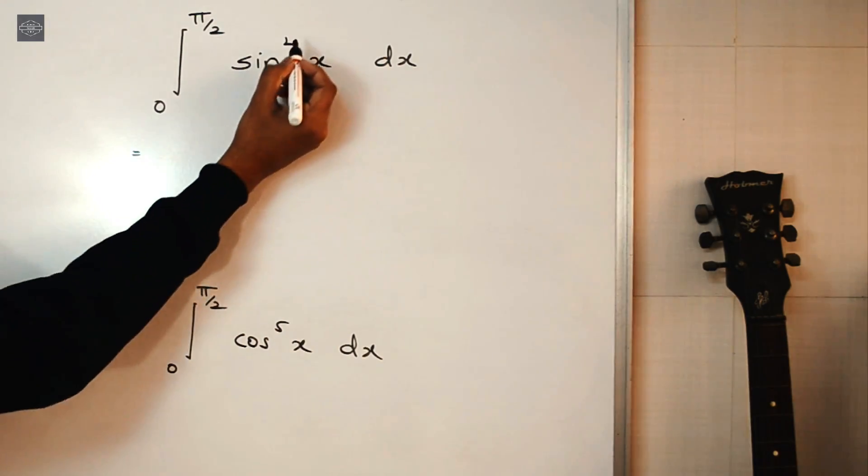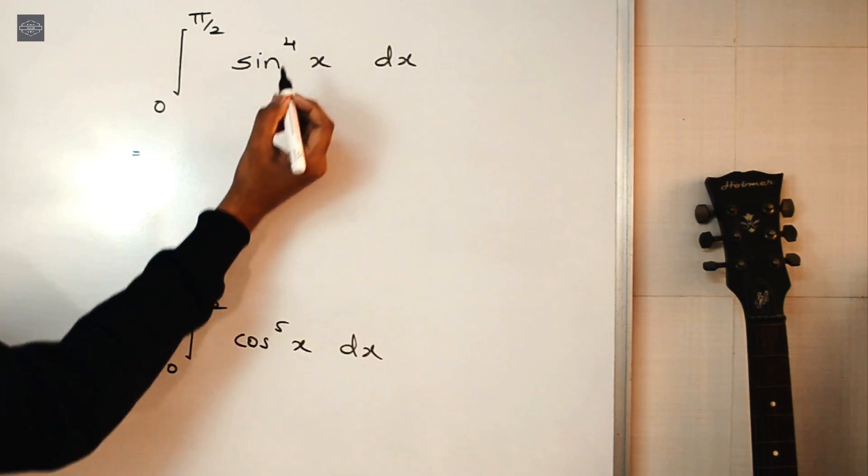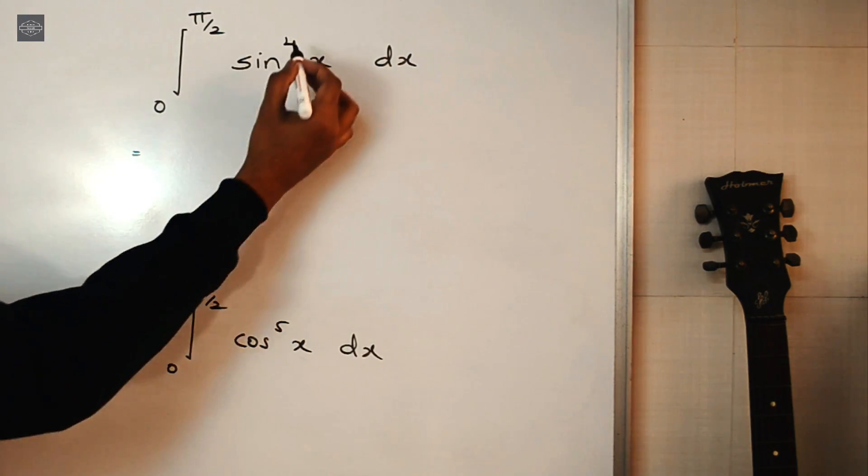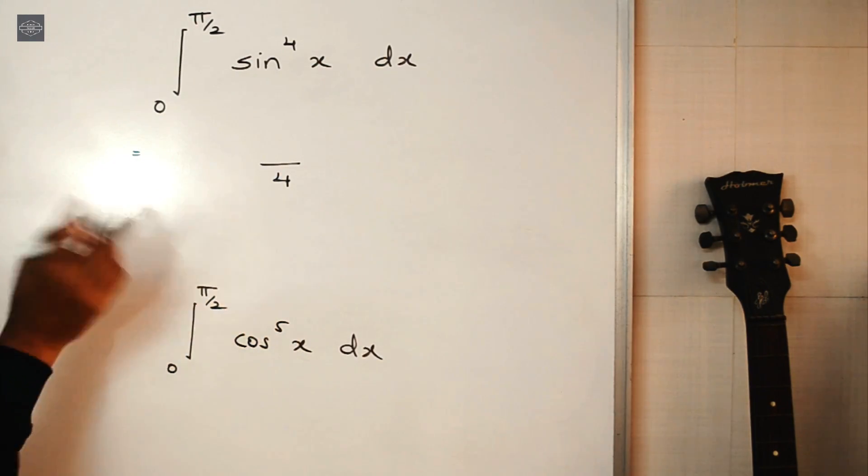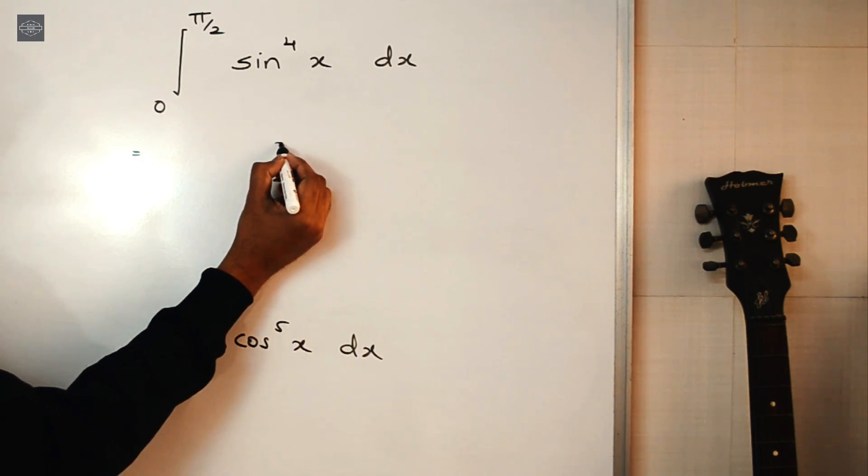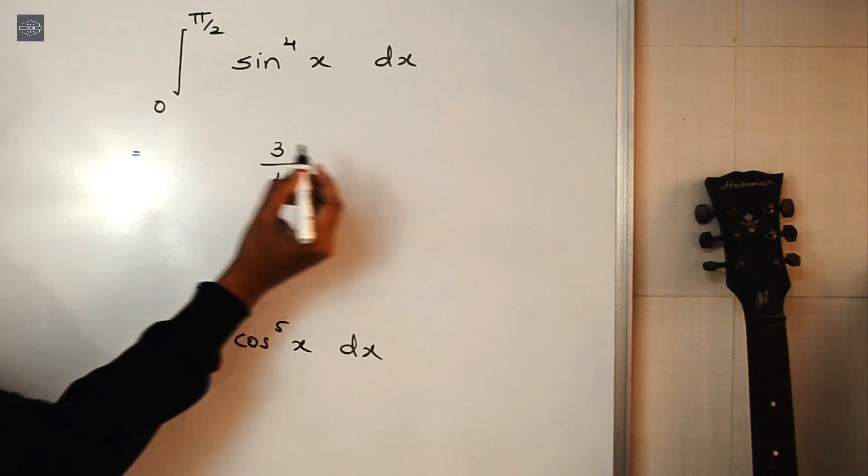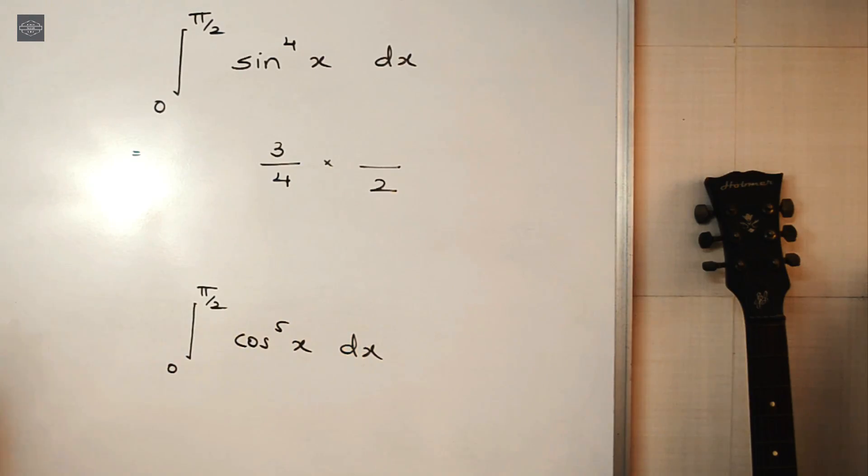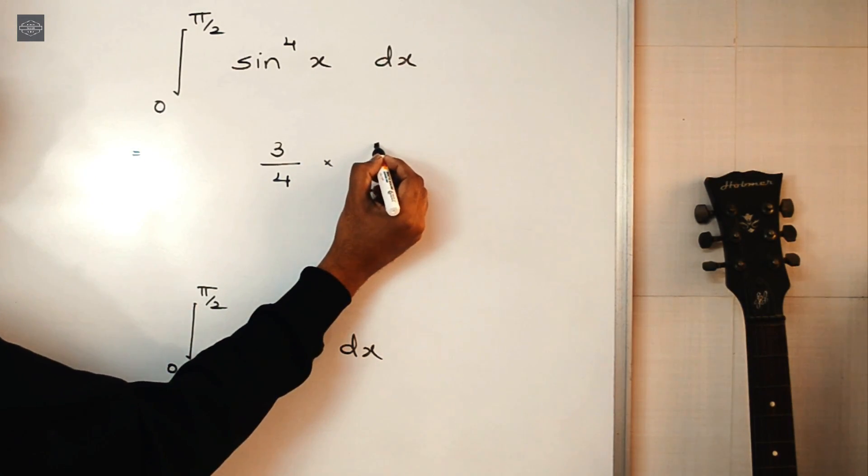Then in this case, the trick says: whatever number we have here in the power, first you have to write it below in the denominator. So 4 is written below. Now one number less than 4, that is 3, you write it above. Now one number less than 3, it is 2, so write 2 here. Then one number less than 2, it is 1, write 1 above.